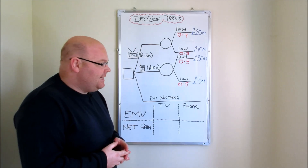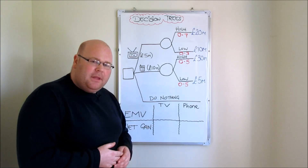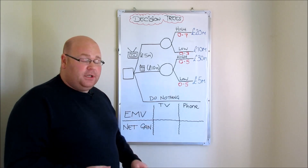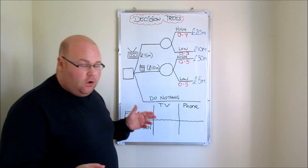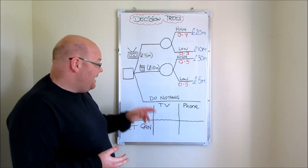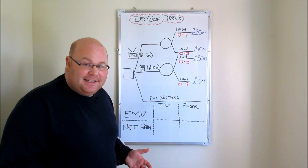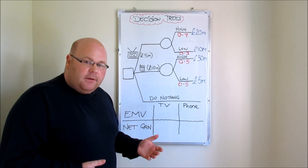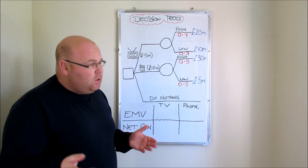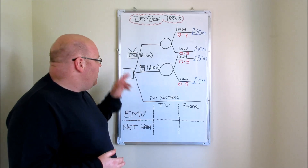As we move along the branches of our decision tree, we have the TV set or the mobile telephone, but businesses always have a third option: to do nothing. They might choose not to launch the TV set and not go with the mobile telephone either. Doing nothing won't cost the firm any money, but neither will it return any funds. We'd only go with the do-nothing approach if both other options would end up costing the business more than it might make.